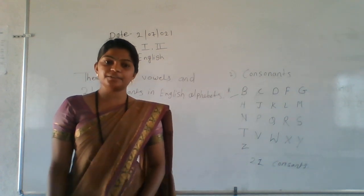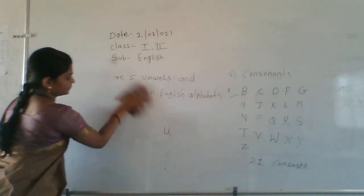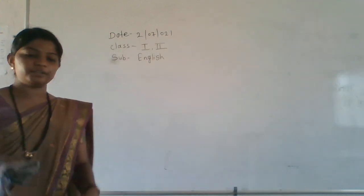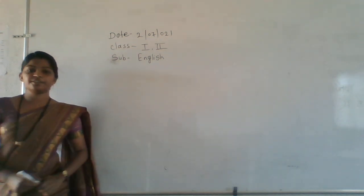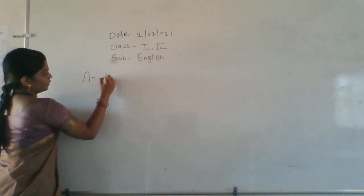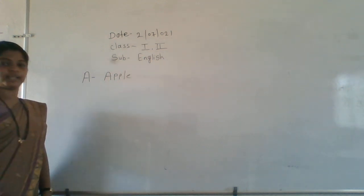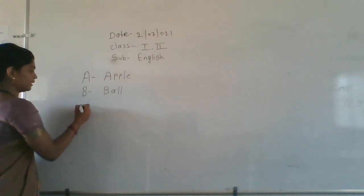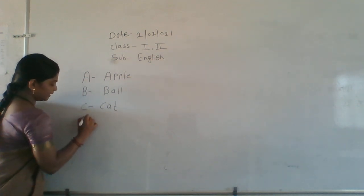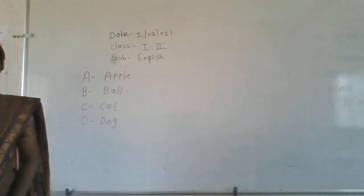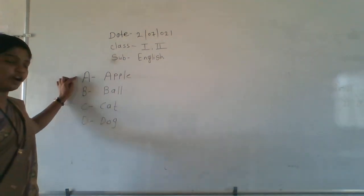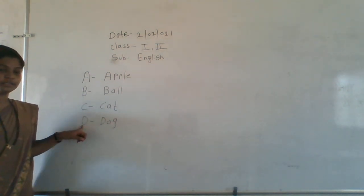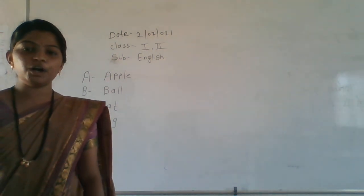Now tell me the names that start with each alphabet. What is this? A for? A for apple. Right? A for apple. B for ball. C for cat. D for dog. Right students? Tell me: A for apple, B for ball, C for cat, D for dog.